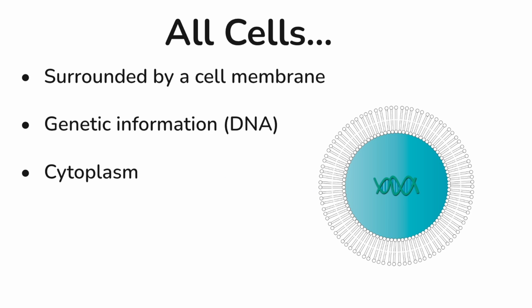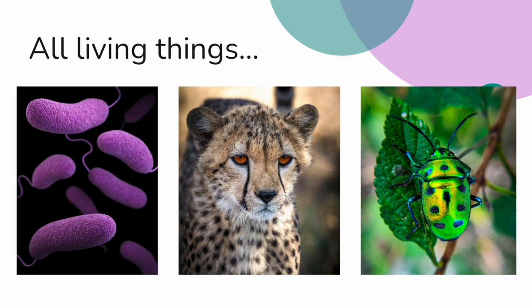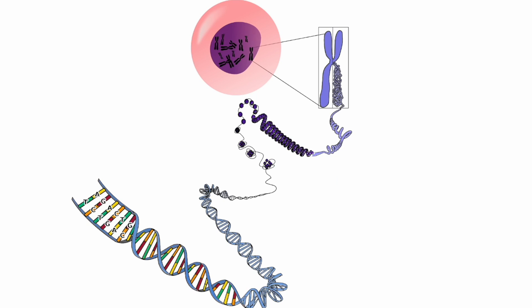Let's start with the basic unit of life itself. Cells. All cells are surrounded by a cell membrane, a phospholipid bilayer, they all contain genetic information, mostly DNA, and they all contain cytoplasm. All living things have a genome, the entire set of genetic material, or all the biological instructions for one organism.